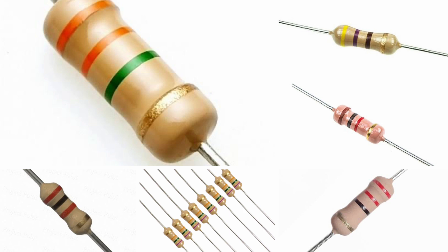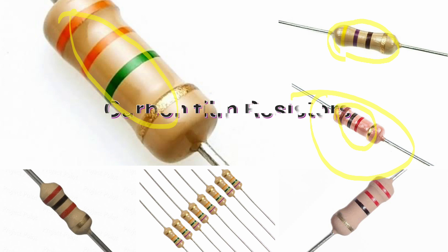I'm going to show you some practical resistors and then we're going to discuss about the basics of resistors. Basically, resistors have two leads and some color codes. These color codes represent their value. We are going to discuss how to identify a resistor's value from its color code. This is what a carbon film resistor looks like.